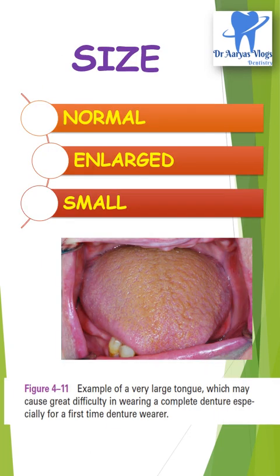Coming to the size of the tongue, size can be classified into normal, enlarged, and small. The presence of a large tongue decreases the stability of the denture, compromises impression making, and tongue biting is most common after the insertion of dentures. A small tongue does not provide adequate lingual periphery.